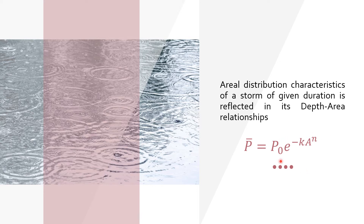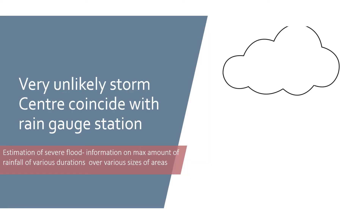We have analyzed the same equation for North India and its rainfalls. The highest rainfall is at the center of the storm. The depth of rainfall decreases exponentially outward from the center. The equation is: P̄ = P₀ · e^(−k · A^n).